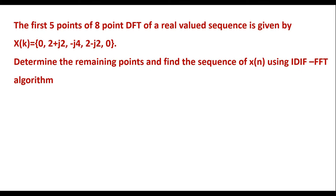In this video, I will consider one numerical to calculate the inverse DFT of a given sequence. The first 5 points of an 8-point DFT of a real-valued sequence are given by X(k) equal to 0, 2+j2, -j4, 2-j2, and 0. Determine the remaining points and find the sequence x(n) using the IDIF FFT algorithm, where IDIF means inverse decimation-in-frequency fast Fourier transform algorithm.